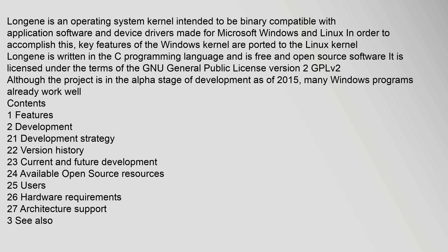Longin is an operating system kernel intended to be binary compatible with application software and device drivers made for Microsoft Windows and Linux. Key features of the Windows kernel are ported to the Linux kernel. Longin is written in the C programming language and is free and open source software, licensed under the terms of the GNU General Public License version 2 (GPL v2). Although the project is in the alpha stage of development as of 2015, many Windows programs already work well.